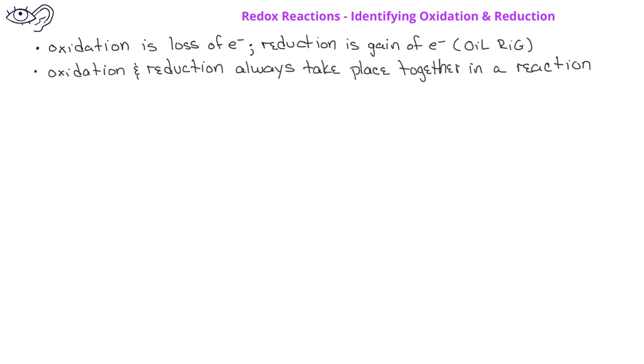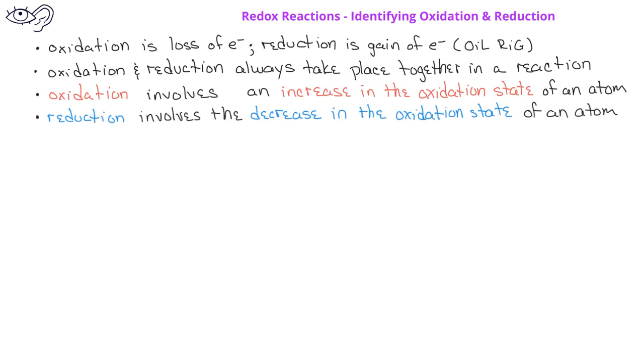We can identify oxidation by recognizing the atoms in the reaction that increase in oxidation state. We can recognize a reduction in a redox reaction because it involves a decrease in oxidation state of an atom from the reactant to the product side.